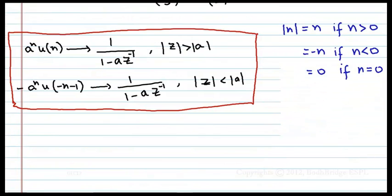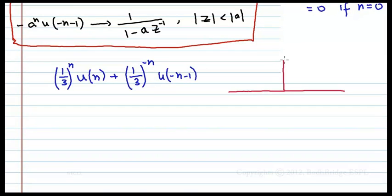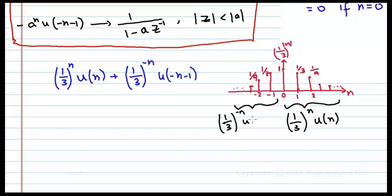Now proceed with the question. x(n) = (1/3)^|n| means: for n > 0, it is (1/3)^n · u(n); and for n < 0, it is (1/3)^(-n). At n = 0 it is 1, at n = 1 it is 1/3, at n = 2 it is 1/9, and so on — it decreases. Similarly on the negative side: 1/3 at n = -1 and 1/9 at n = -2, decreasing. Therefore, the positive part can be written as (1/3)^n · u(n) and the negative part as (1/3)^(-n) · u(-n-1).